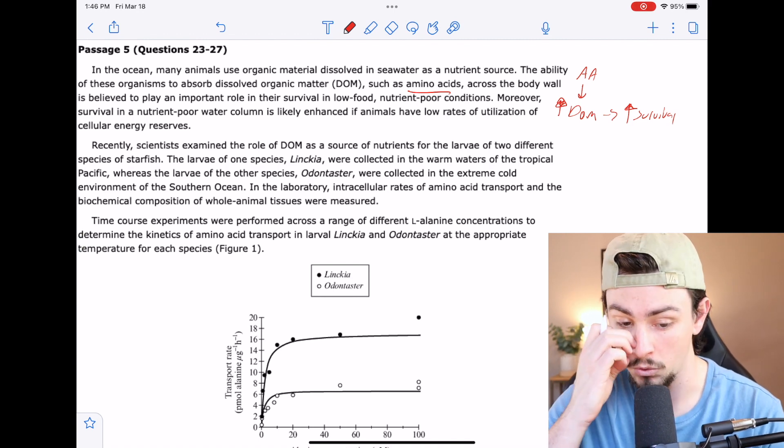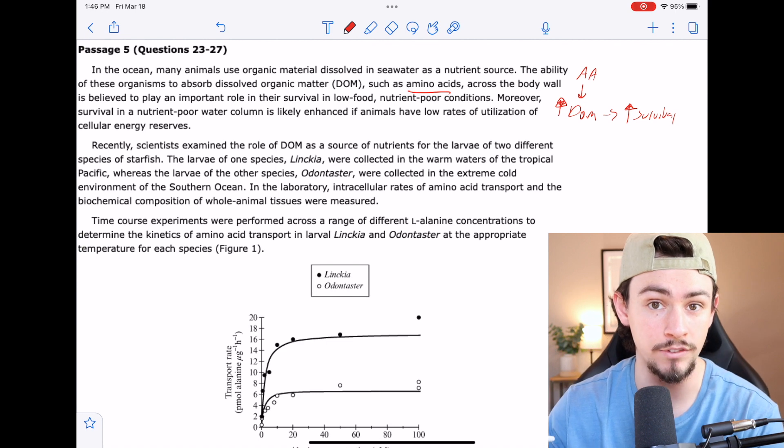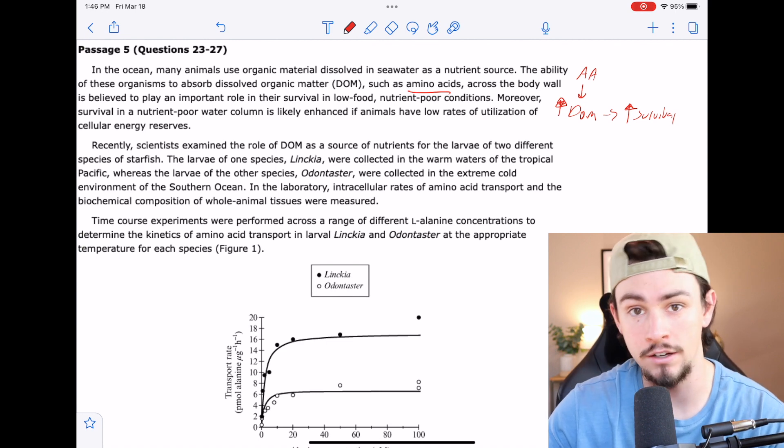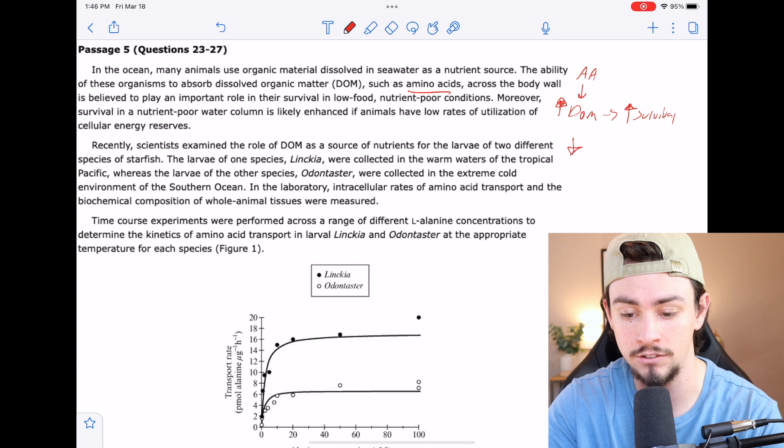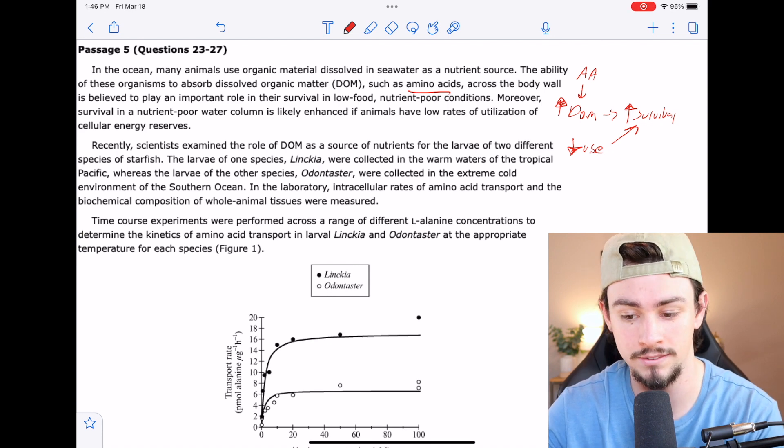Moreover, survival in a nutrient-poor water column is likely enhanced if animals have low rates of utilization of cellular energy reserves. So this is another way we can survive is by actually decreasing how much energy we use. It's like trying to build up a bank account. I can either make more money or I can spend less.